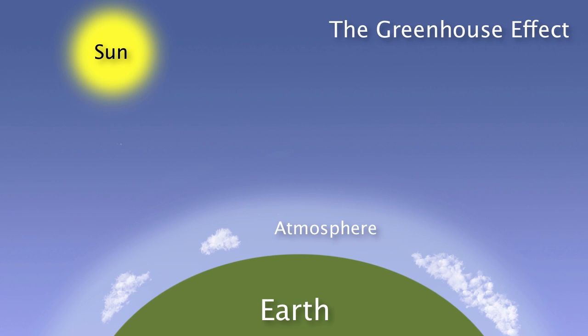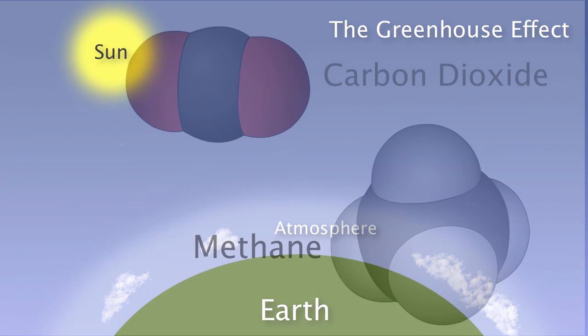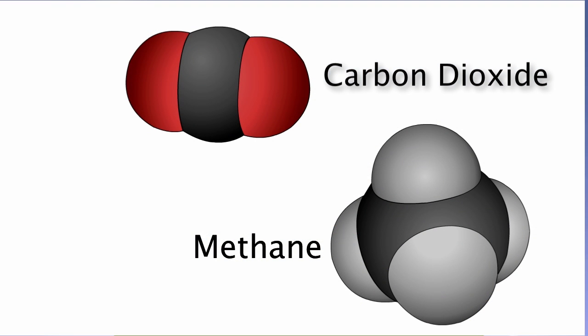Our atmosphere contains a number of different gases. Several of these, such as the carbon dioxide and methane molecules shown here, are called greenhouse gases.